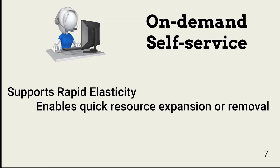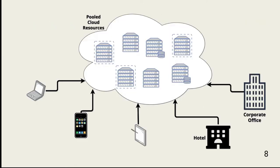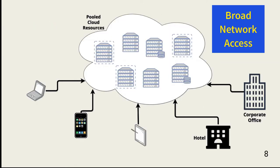On-demand self-service is closely related to rapid elasticity. Individuals authorized by the consumer can contact the CSP and quickly bring up needed resources or take them down. This contrasts with the weeks it might take to purchase, receive, configure, and implement data center resources. Broad network access provides consumer, customer, employee, partner, and supplier access to needed resources from anywhere at any time, with high guaranteed uptimes and support for all types of user devices.